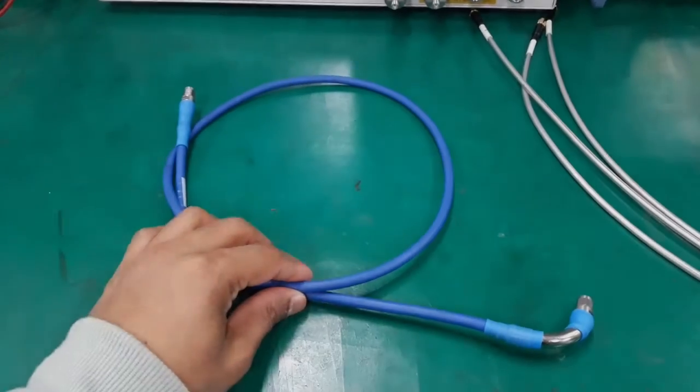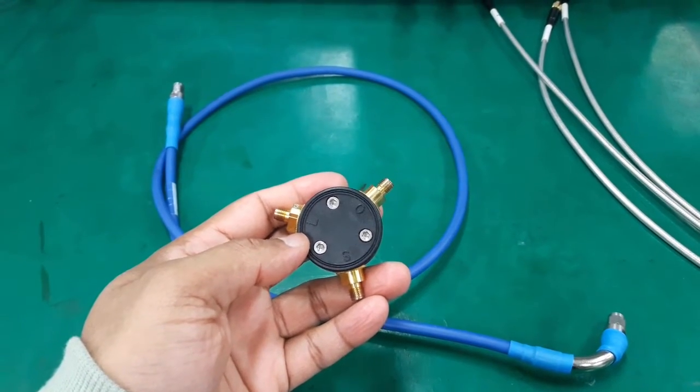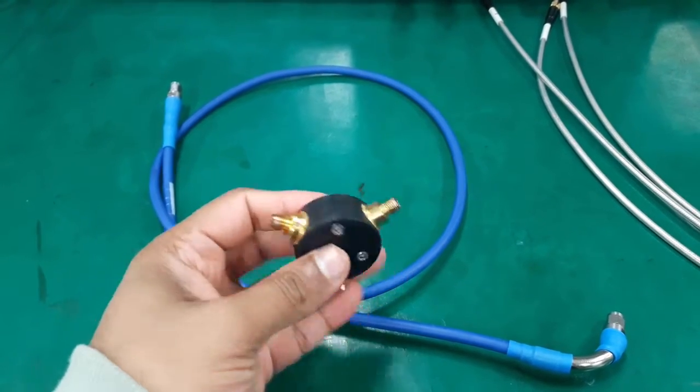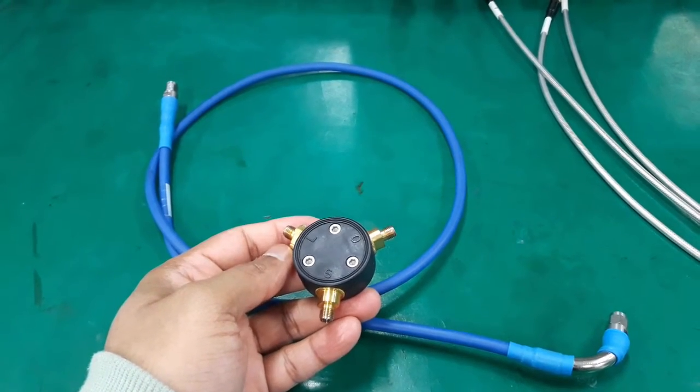So this is a coaxial cable for measurement purpose and this is a calibration kit. In short we call it cal-kit. It has three terminals S, L and O. S for short, L for load and O for open.